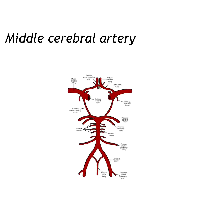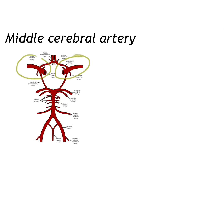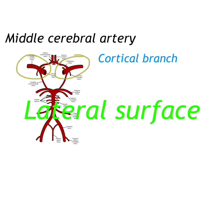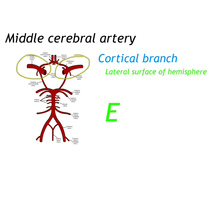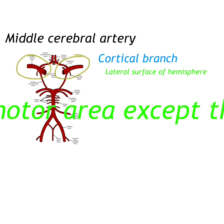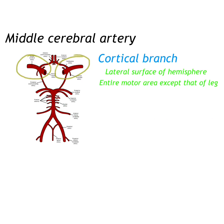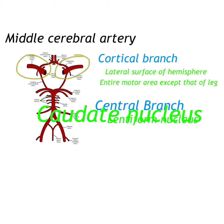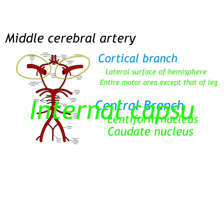The last and the largest branch of the internal carotid artery is the middle cerebral artery. The cortical portion of the middle cerebral artery supplies the entire lateral surface of the hemisphere and the entire motor area except for that of the leg. The central branches supply the lentiform and caudate nucleus and the internal capsule.